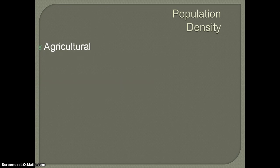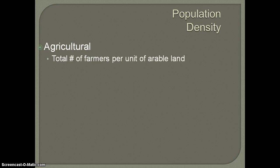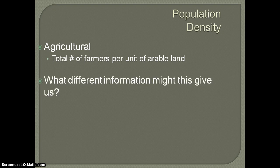The last density type is what's called agricultural density. Agricultural density gets more at the type of jobs that people have in a country and the level of development in that country. Agricultural density is the total number of farmers per unit of arable land — total number of farmers in a country divided by the amount of arable land in a country. Typically speaking, the higher the agricultural density, the less developed a country is going to be, mainly because that indicates you need more people to work the land, which typically means less technology is available.